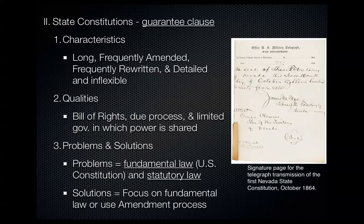Characteristics of a state constitution: they're long — averaging 28,000 words, compared to the U.S. Constitution's 7,400 words. They're frequently amended — on average amended 100 times, compared to the U.S. Constitution's 27 amendments. They're rewritten a lot — on average three constitutions have been rewritten per state, with Louisiana holding the record at 11 complete rewrites. They're also overly detailed and inflexible, making it hard to adapt during times of change.